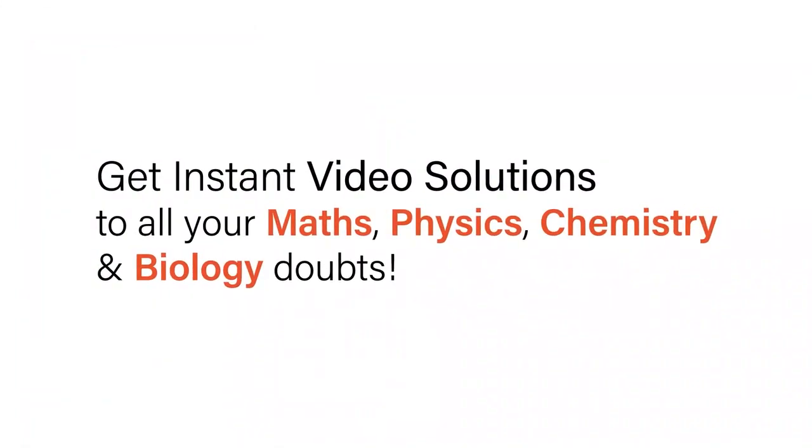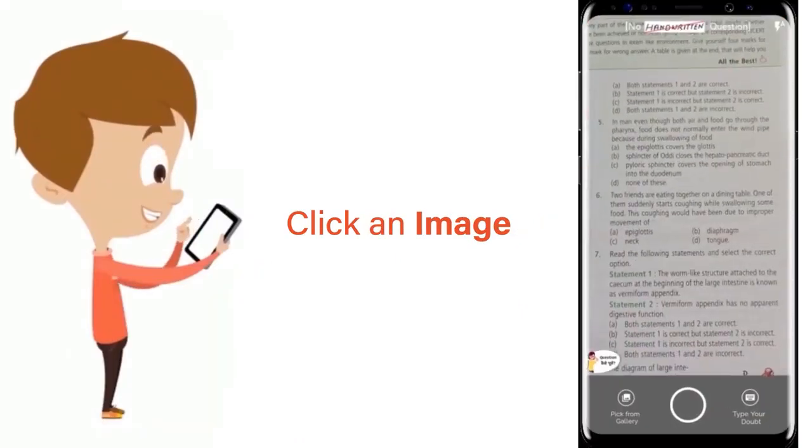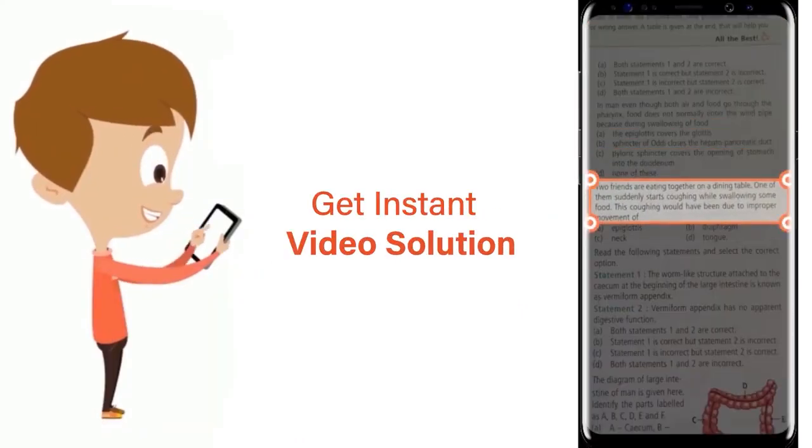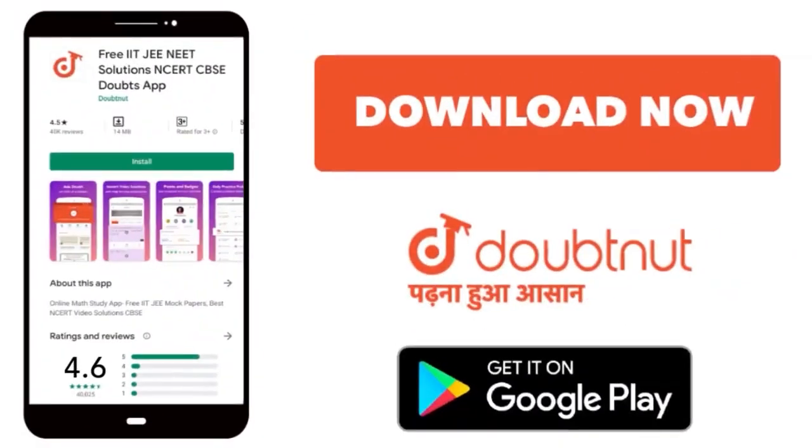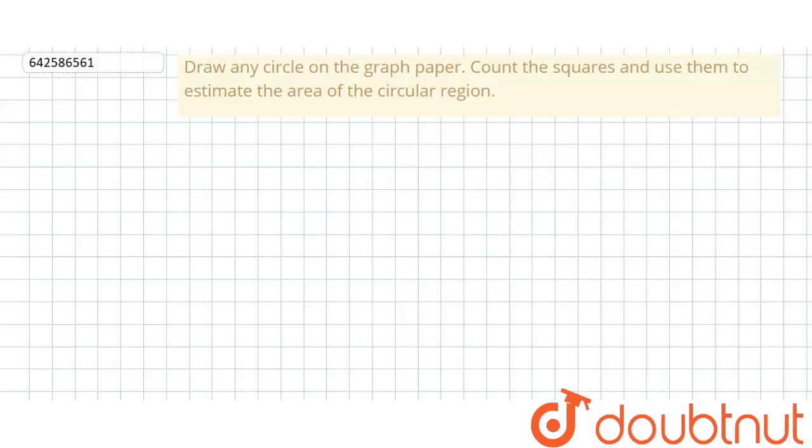With Doubtnut, get instant video solutions to all your math, physics, chemistry, and biology doubts. Just click the image of the question, crop the question, and get an instant video solution. Download Doubtnut app today. Welcome students, the question is: draw any circle on a graph paper, count the squares and use them to estimate the area of the circular region.